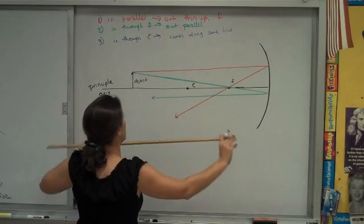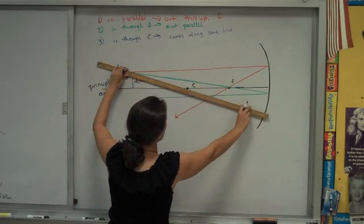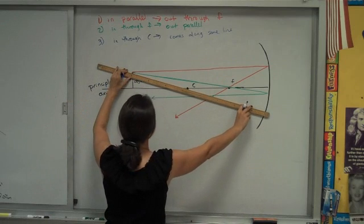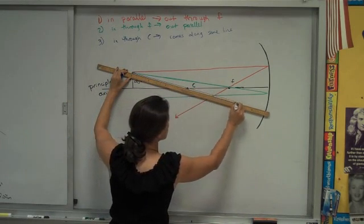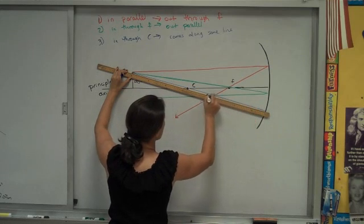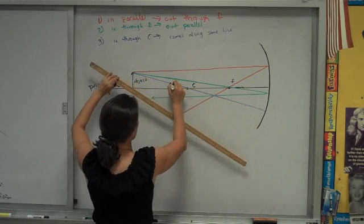So if I draw a light coming in through my point c there, so right through c, you can see, after it hits the mirror, it bounces right back out the same way that it came in.